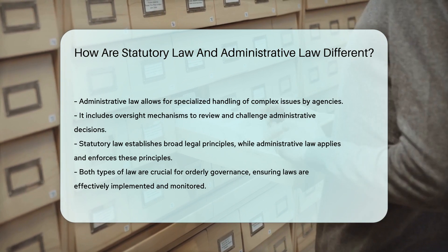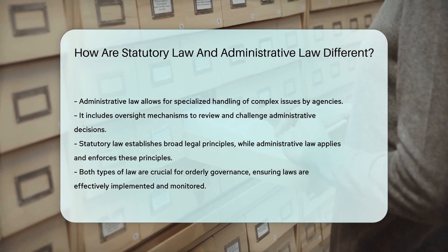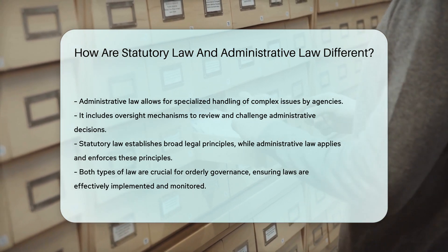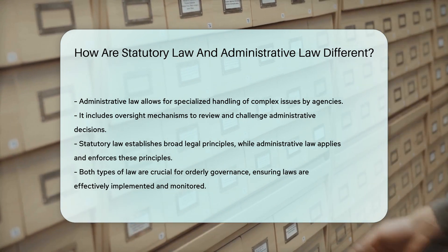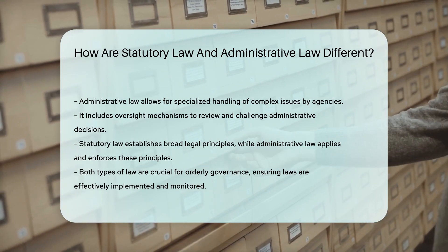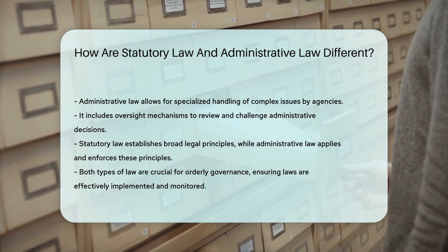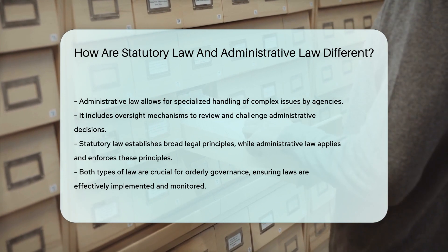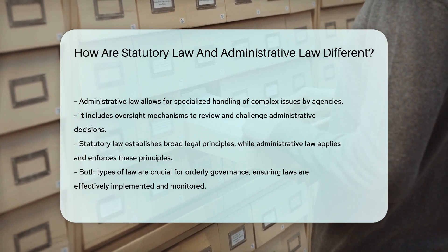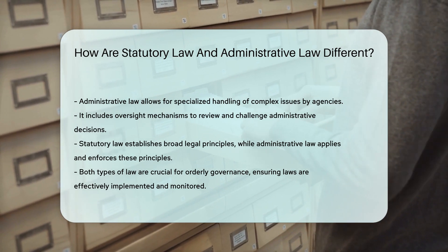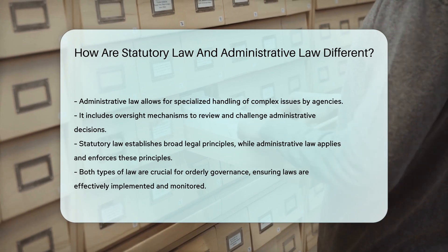In summary, while statutory law sets out the broad legal principles and rules of society, administrative law focuses on the practical application and enforcement of these rules by government agencies. Both are essential for the orderly governance and regulation of society, ensuring that laws are not only made but are also effectively implemented and monitored.